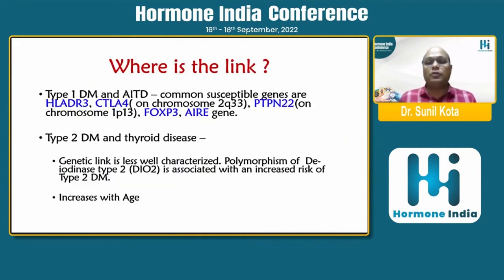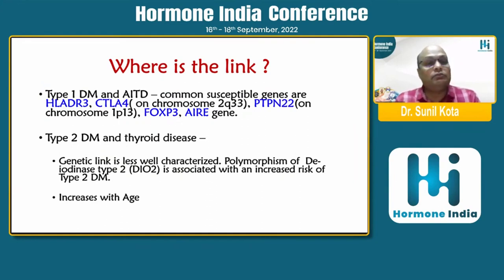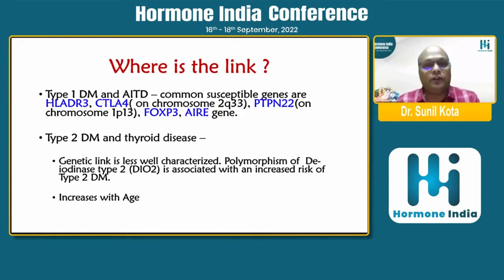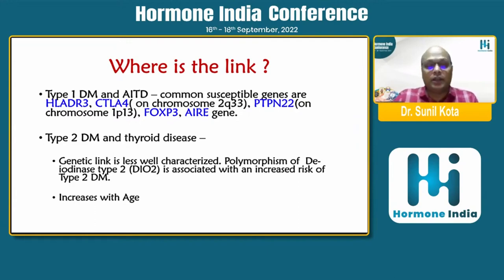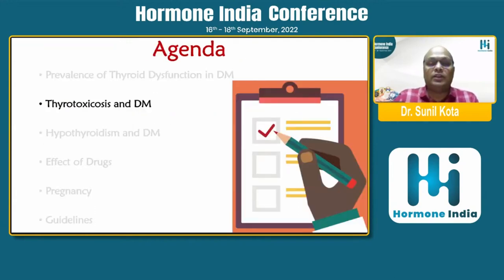So where is the link? We have a number of common susceptible genes within HLA-DR3, CTLA-4, PTPN-22, FOXP3, and AIRE gene. We know the different types of PGAs or polyglandular autoimmune syndromes, especially type 2 and type 3, and there is a strong association between these two disorders. There is also a polymorphism of D-iodinase type 2, which is associated with an increased risk of type 2 diabetes, and the chances go up with age.